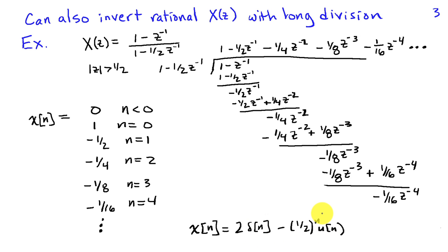In general, if these are higher order polynomials that we're dividing, it's going to be much more difficult to see a pattern and express this in closed form. For closed form expressions of rational functions, the method of partial fraction expansion is much more appropriate.